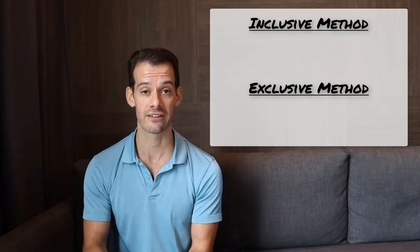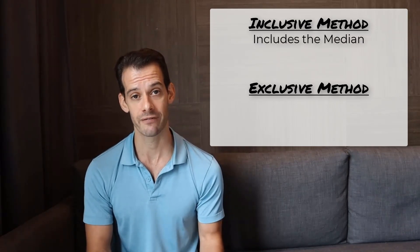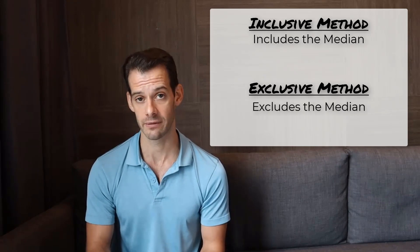These are an inclusive method and an exclusive method. And this refers to whether we're including the median as being part of our upper and lower halves of the data or if we're excluding the median.